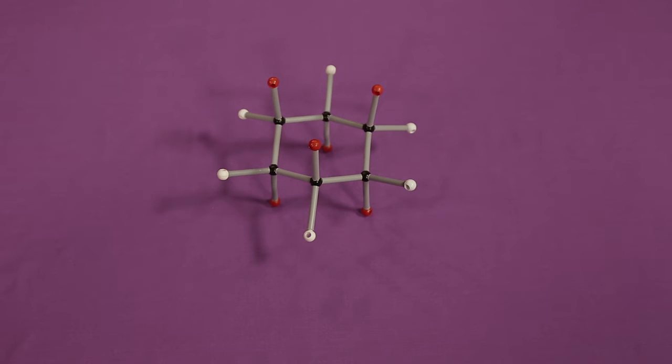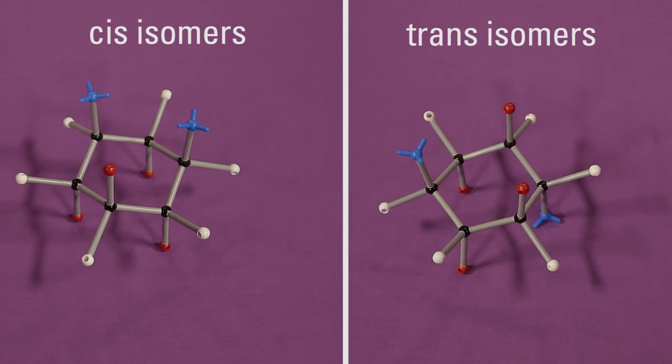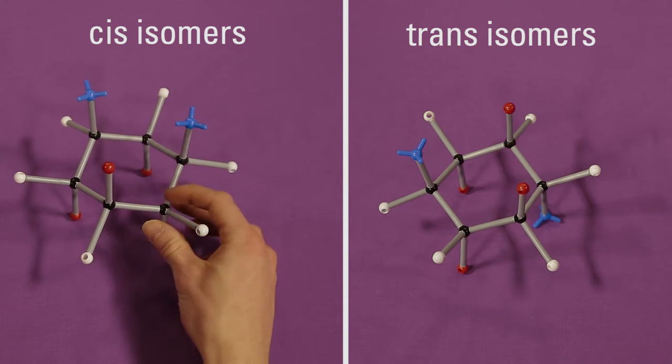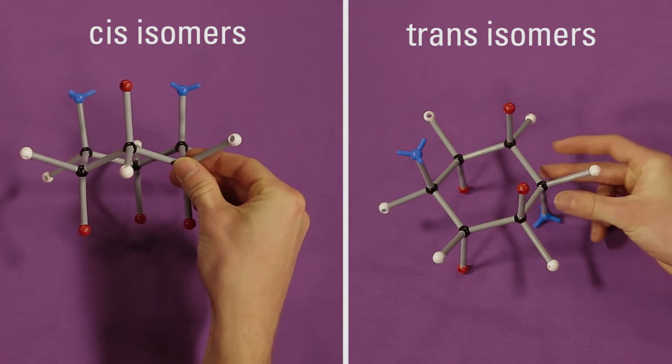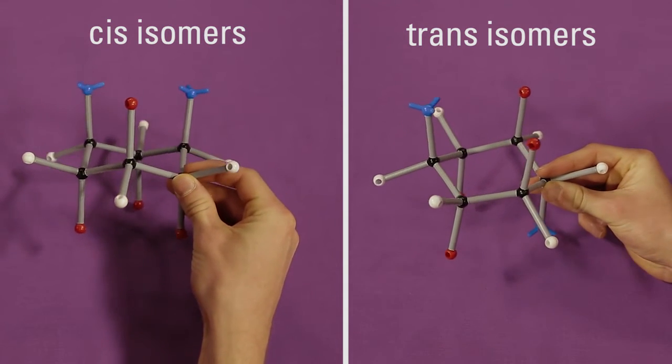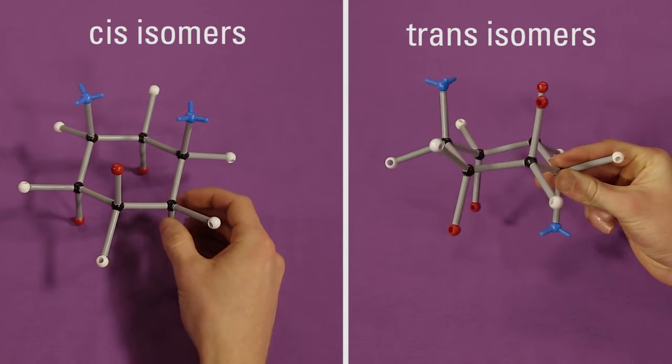Because the ring structures do not allow for complete freedom of rotation, there are two isomers for compounds with the same substituents. Thus, cis, Latin for on the same side, and trans, Latin for across, are used to differentiate the two structures.